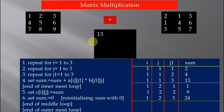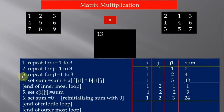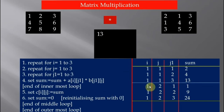The value of sum, which is 13, is assigned to C11 — the first element of resultant matrix C — because i is 1 and j is 1. Since we are computing the next element of the resultant matrix, sum is reinitialized to 0. Control goes to the middle loop, j is incremented to 2, and i remains at 1 for now.